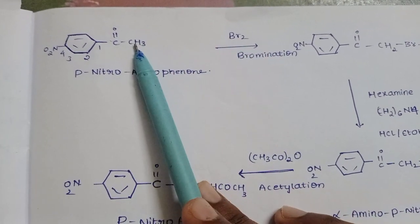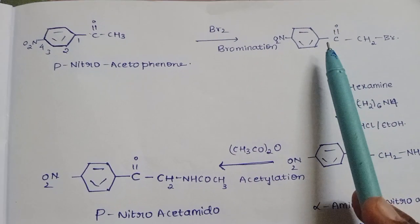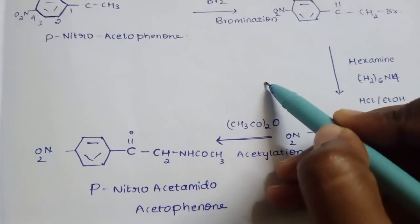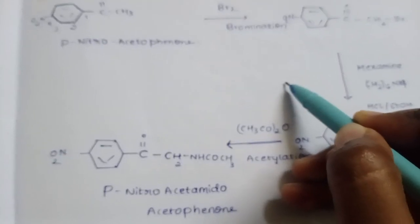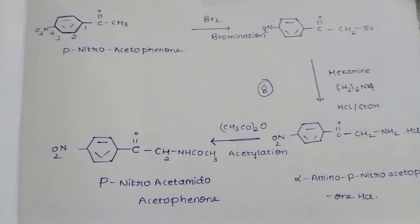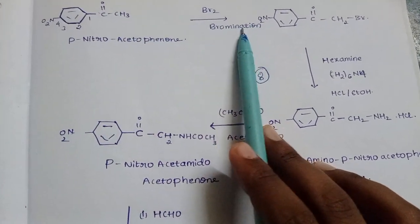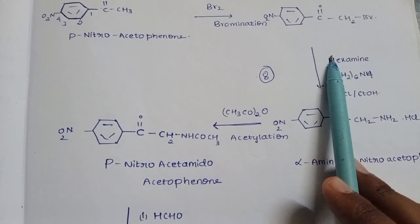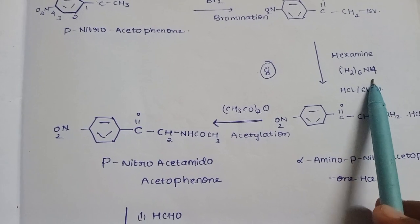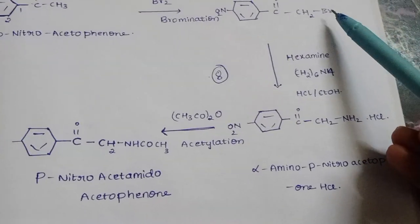The hydrogen is replaced with Br, forming HBr. This bromination is done with hexamine, that is (CH2)6N4, in the presence of HCl and ethanol.